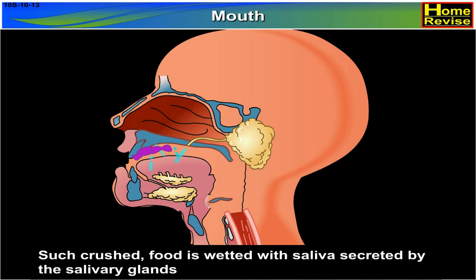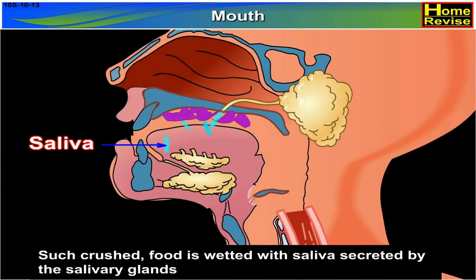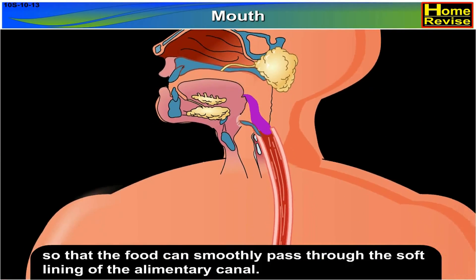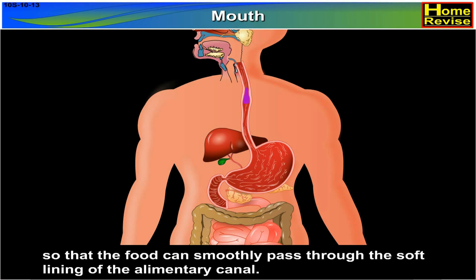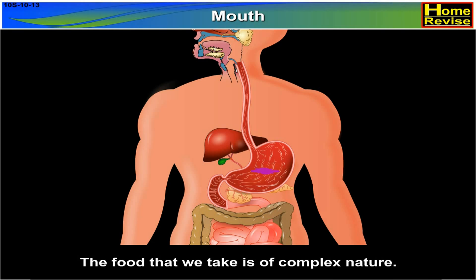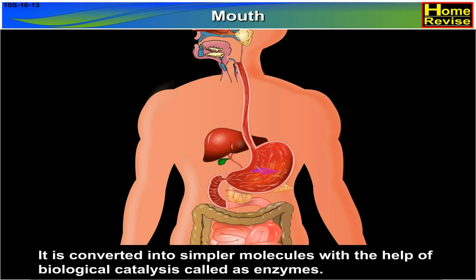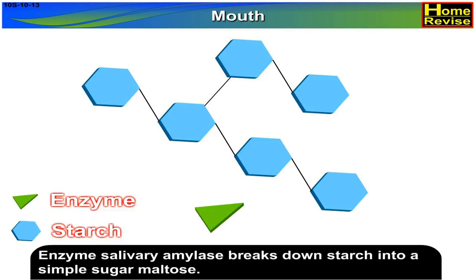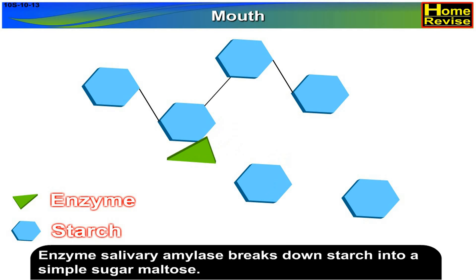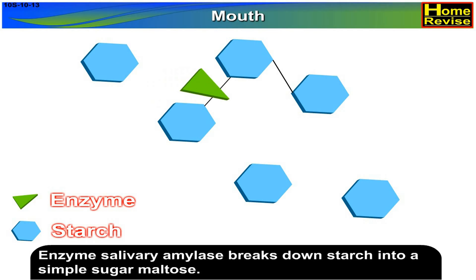Such crushed food is wetted with saliva secreted by the salivary glands so that the food can smoothly pass through the soft lining of the alimentary canal. The food that we take is of complex nature and is converted into simpler molecules with the help of biological catalysts called enzymes. The enzyme salivary amylase breaks down starch into a simple sugar, maltose.